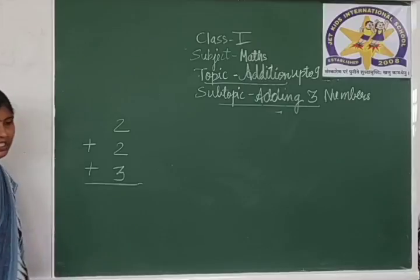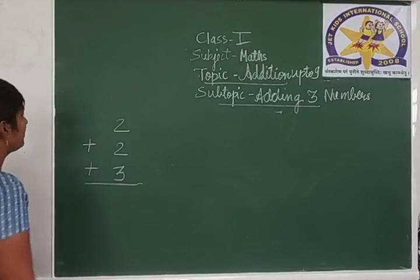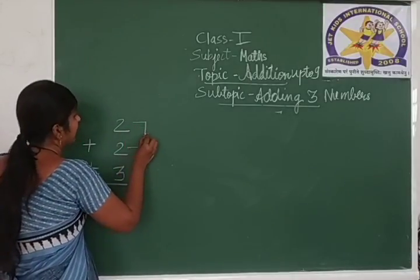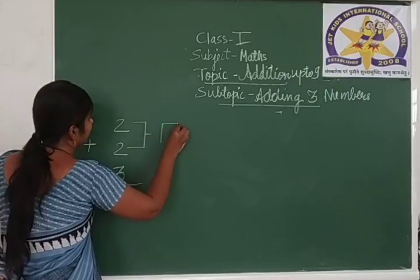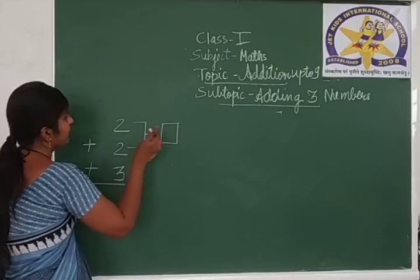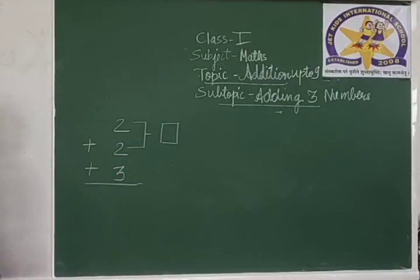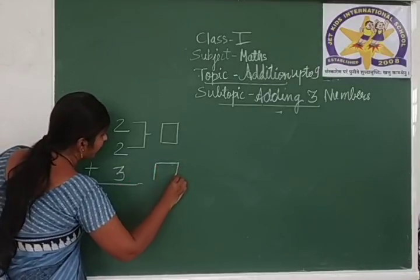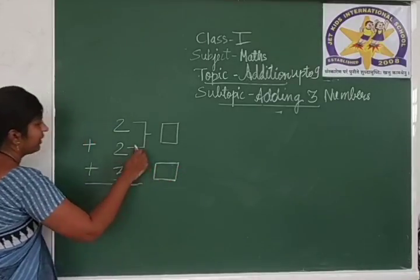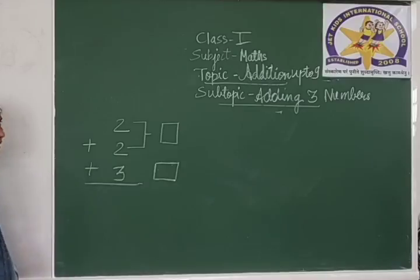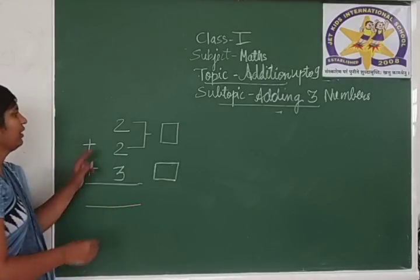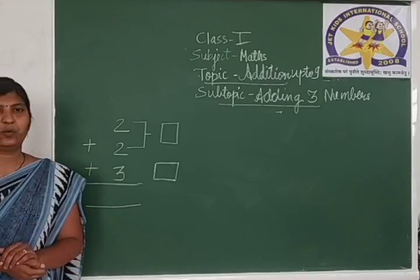Same procedure, same method we are going to follow. First, add the first 2 numbers. We are going to add these 2 numbers first, and then we will add the remaining number to the sum. Now see the first one: 2 plus 2.